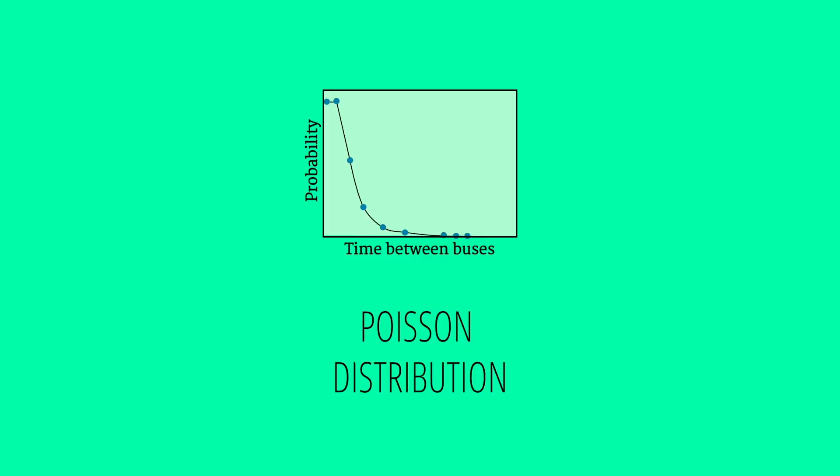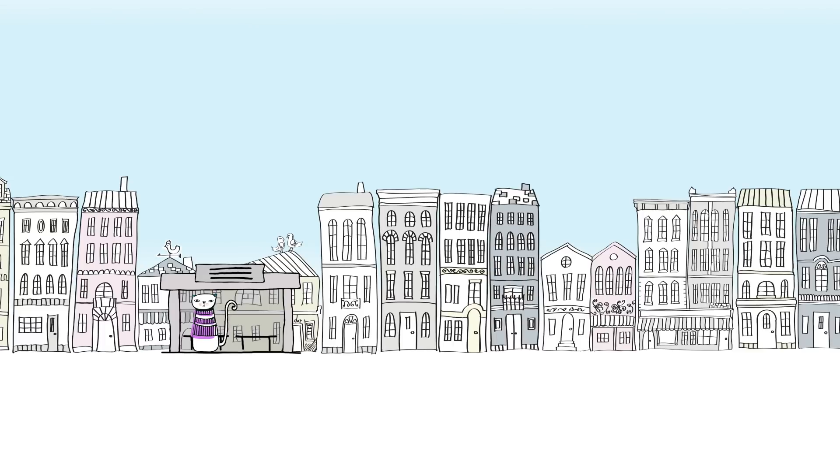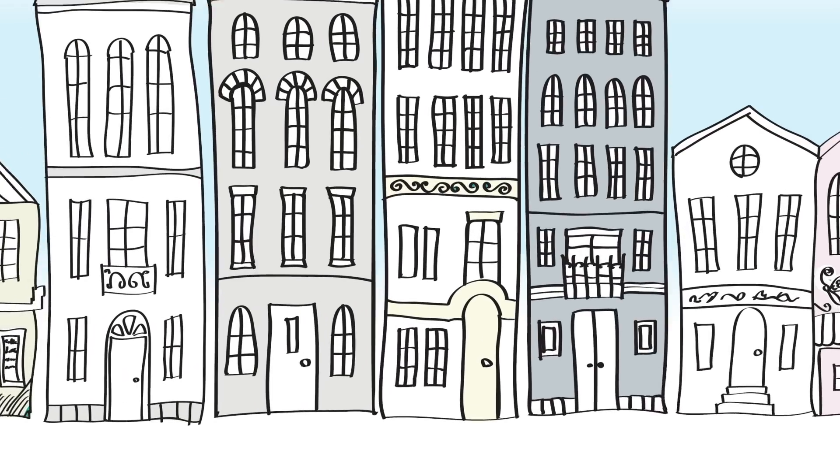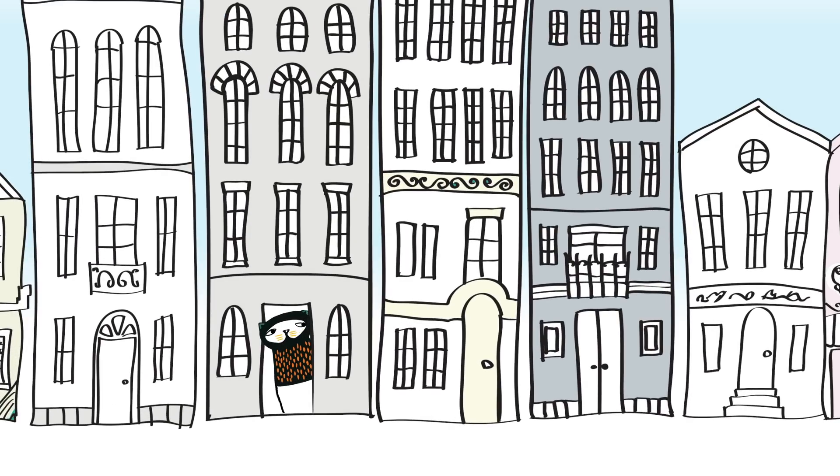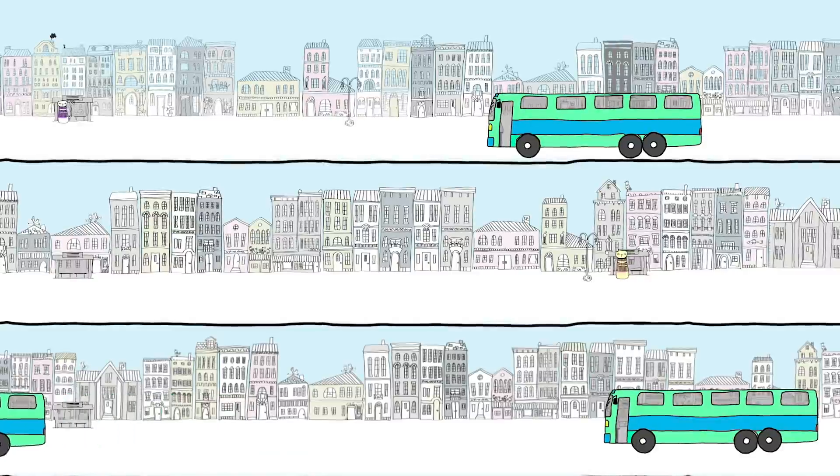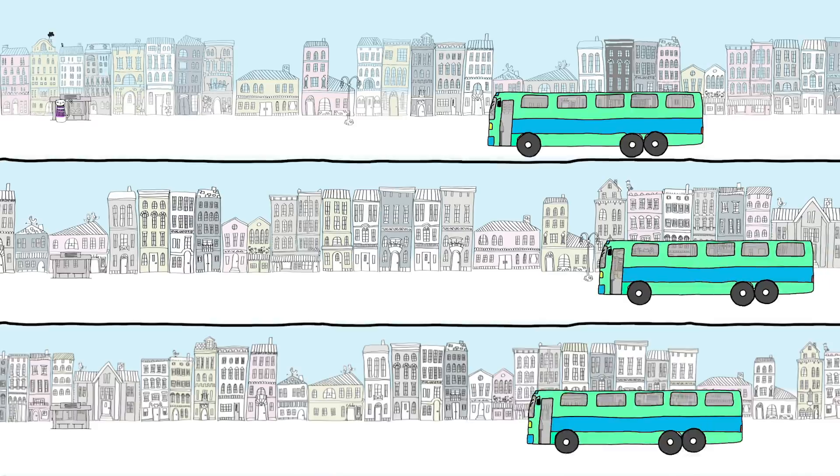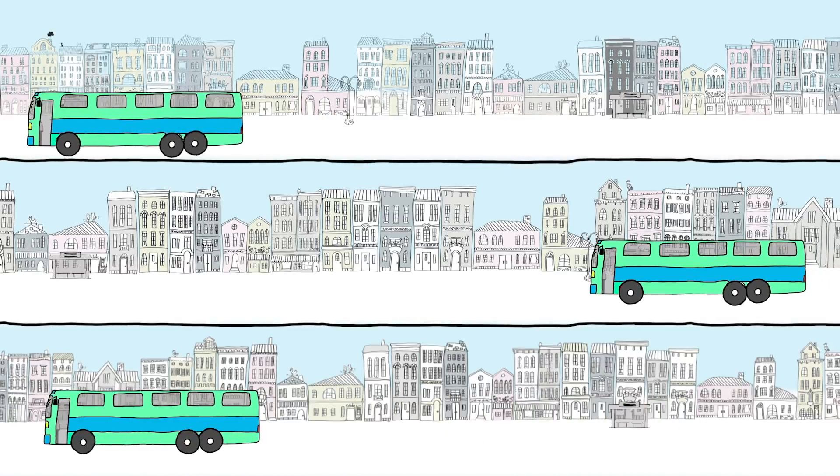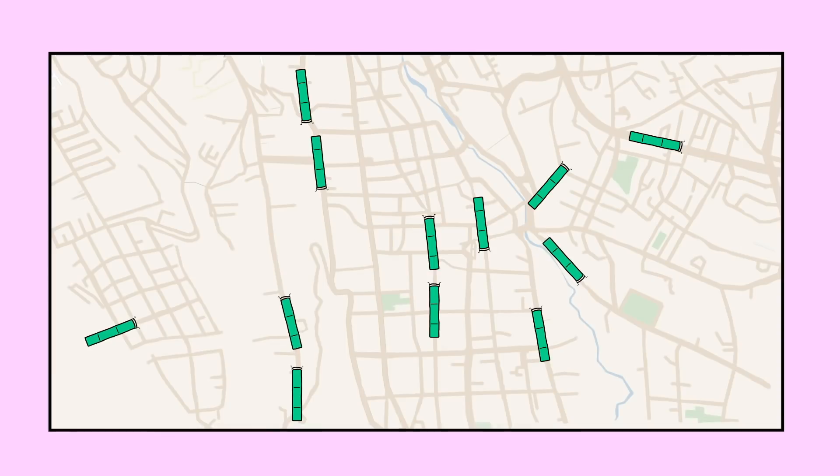But what if bus arrival times are not independent? In the 1970s in Cuernavaca, Mexico, bus drivers would hire spies to sit along their route, and the drivers either speed up or wait at a stop, depending on how long ago their spies said the previous bus left. This spaced out the buses and maximized their profits.